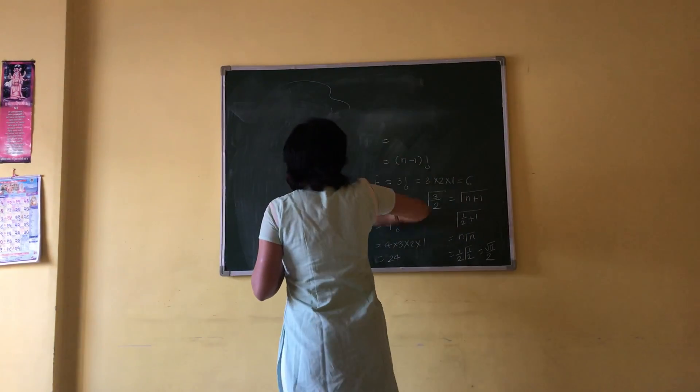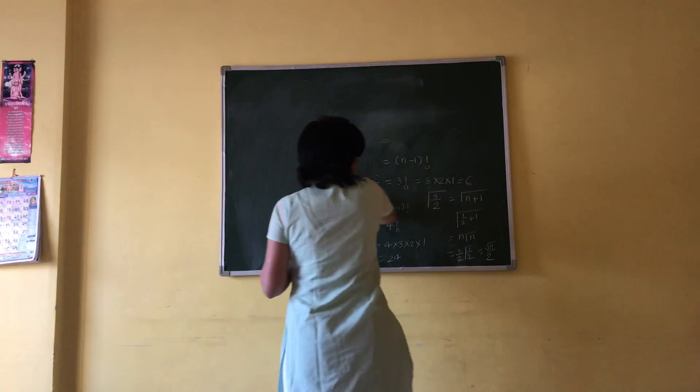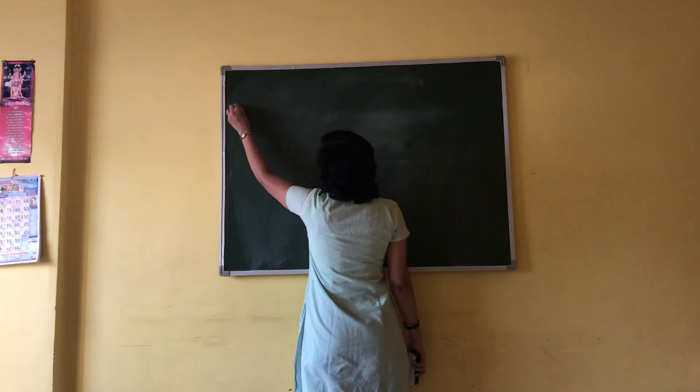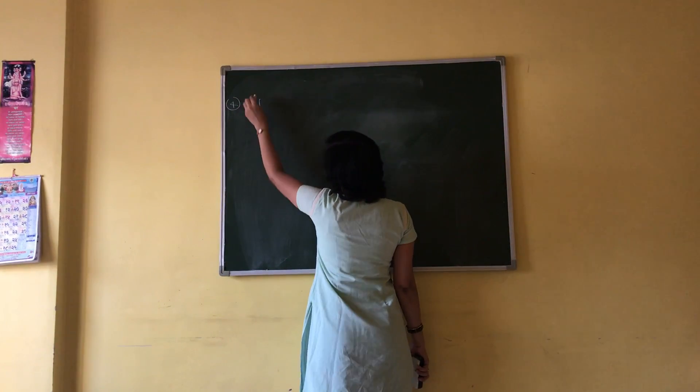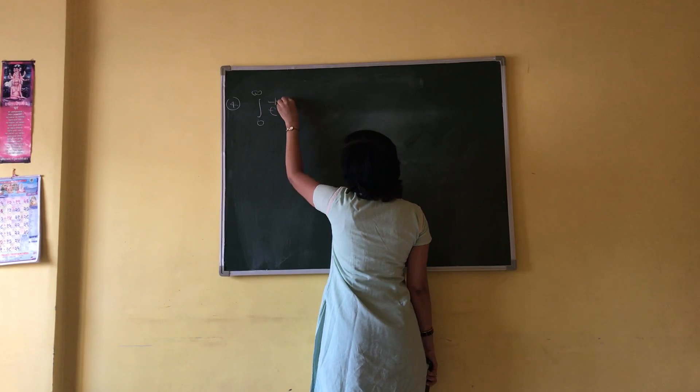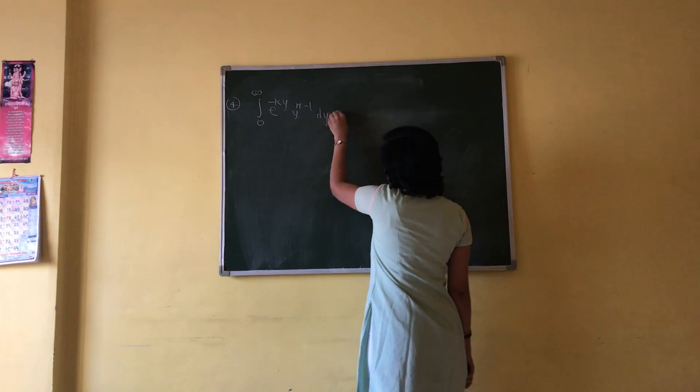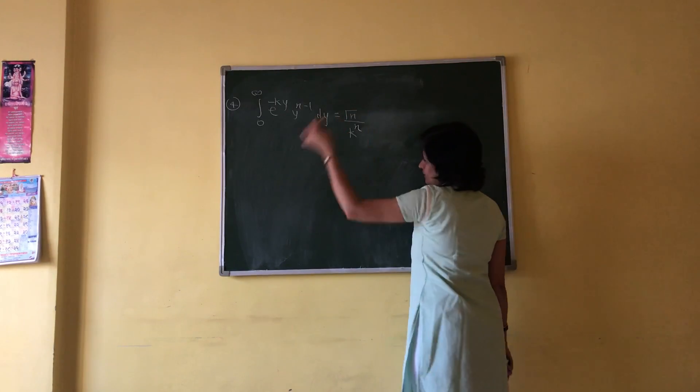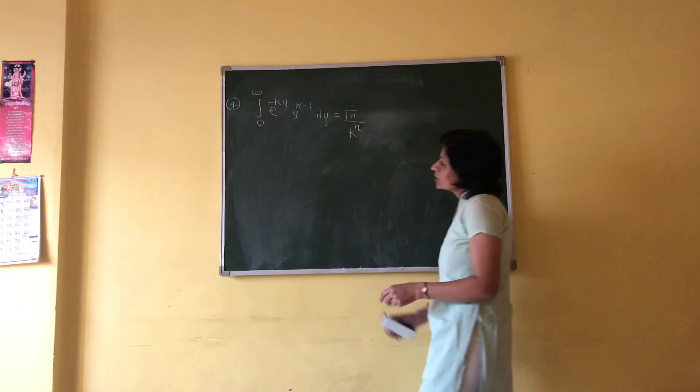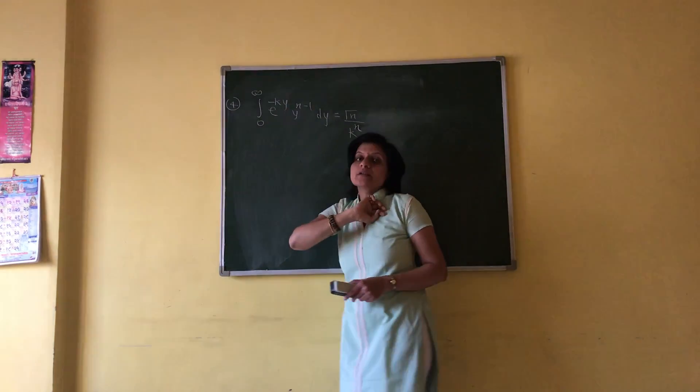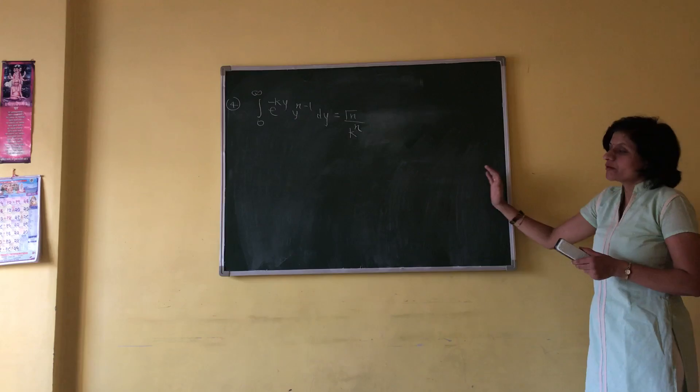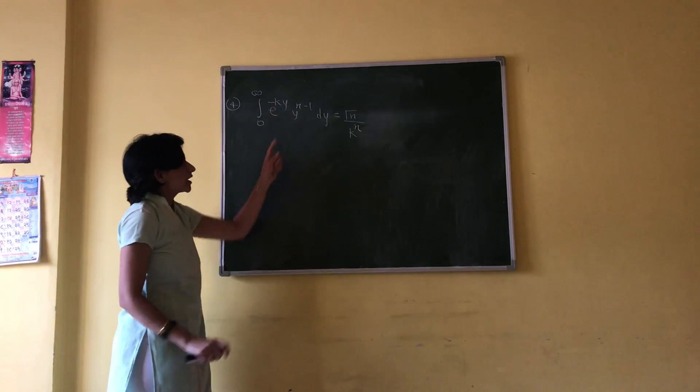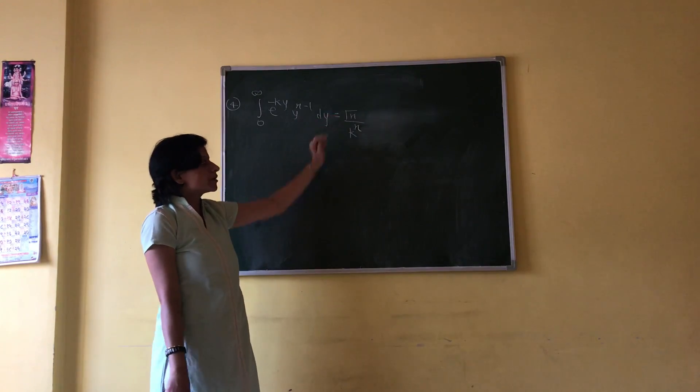The next property is transformation of gamma. The transformation of gamma is the integral from 0 to infinity of e raised to minus ky times y raised to n minus 1 dy equals gamma n divided by k raised to n. Here, the coefficient of y is greater than 1, meaning 2, 3, 4, 5, and so on. Then apply this property.